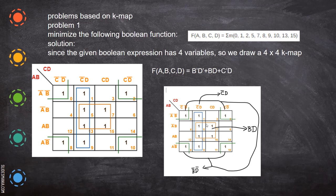When you write the reduced equation for each quad: for the first quad, two variables reduce — A-bar A is gone, so we have B; C-bar C is gone, so we get B D. For the next quad, C-bar C is gone and we have D-bar, then A-bar A is gone giving B-bar D-bar. For the corner quad, the A and B variables cancel giving C-bar and D. The final reduced equation is B D plus B-bar D-bar plus C-bar D.